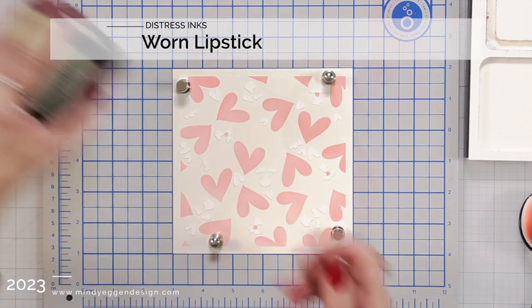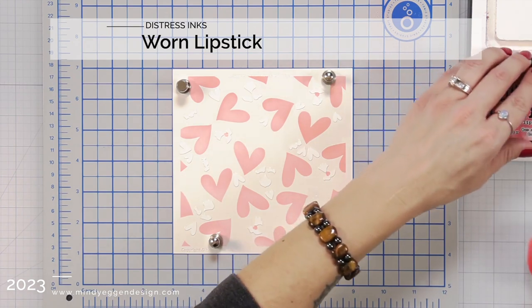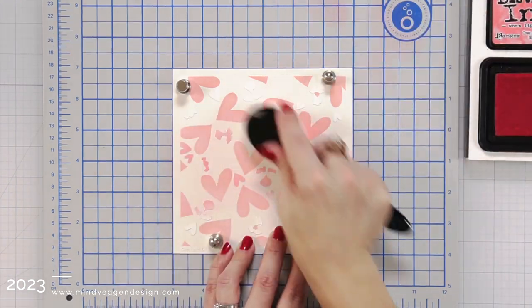So I did hit that with my heat tool to help dry that ink. I didn't want anything to smear as I was adding the other layers of the stencil on.